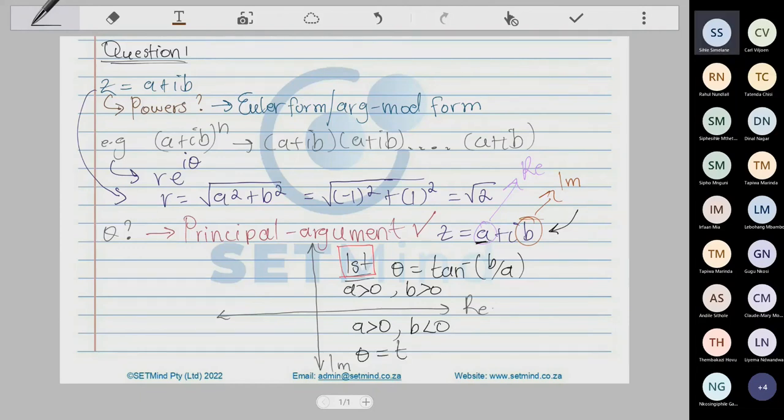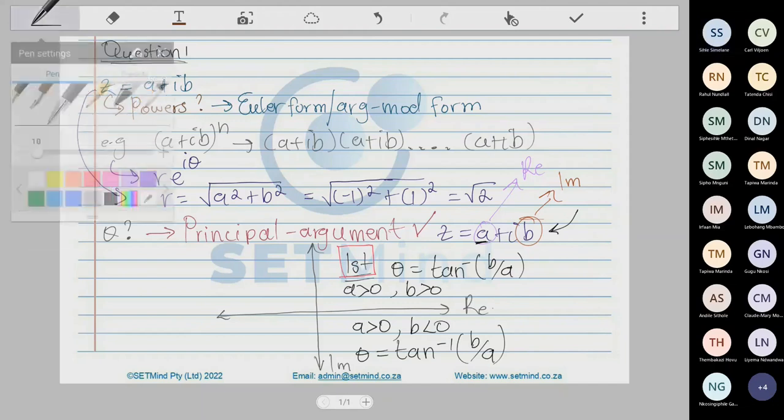You take a as it is and you take b as it is. B is whatever which is multiplying the i side, and your theta will be whatever value you get there. This is the fourth quadrant.